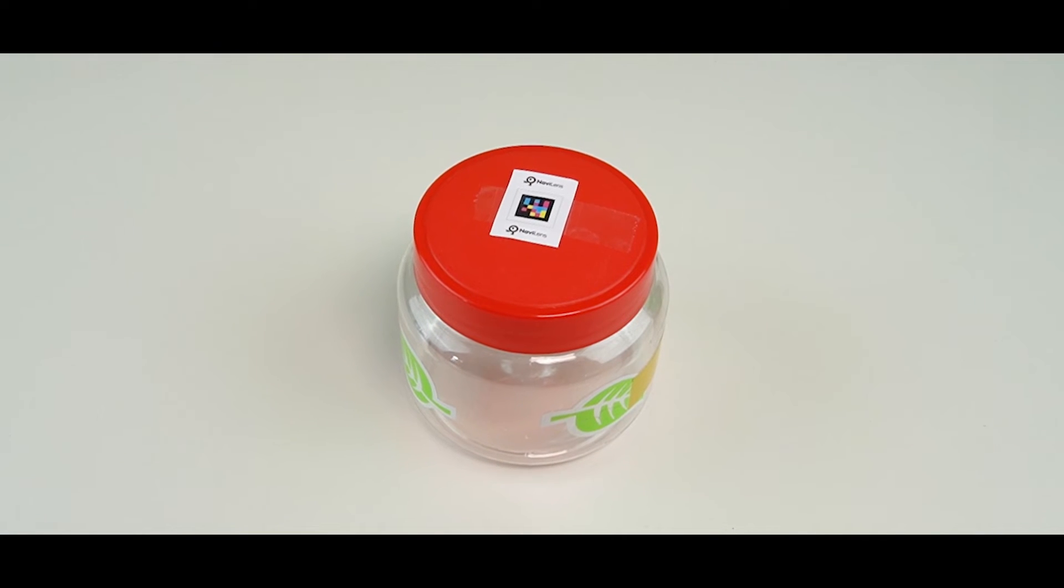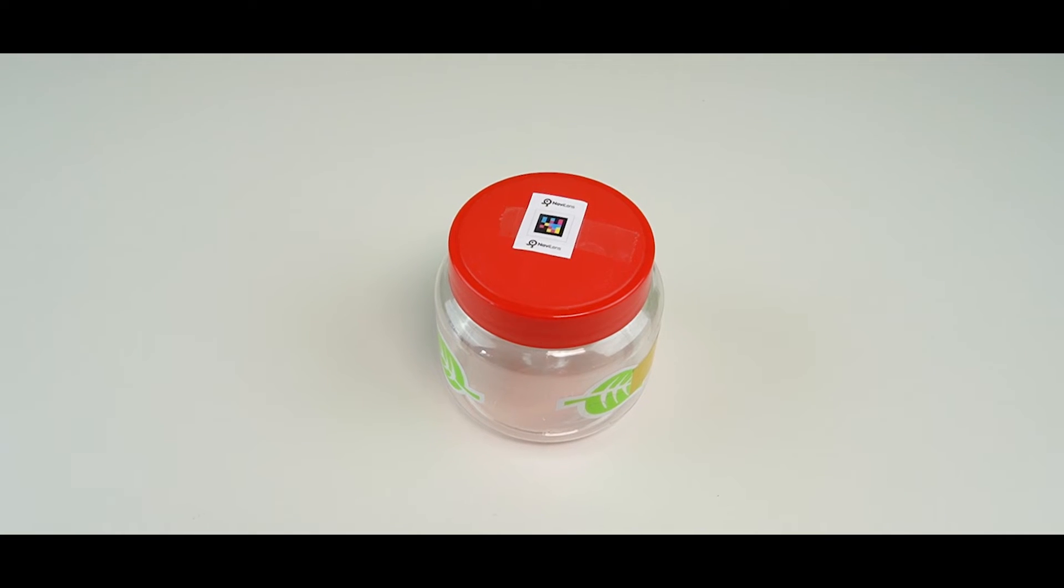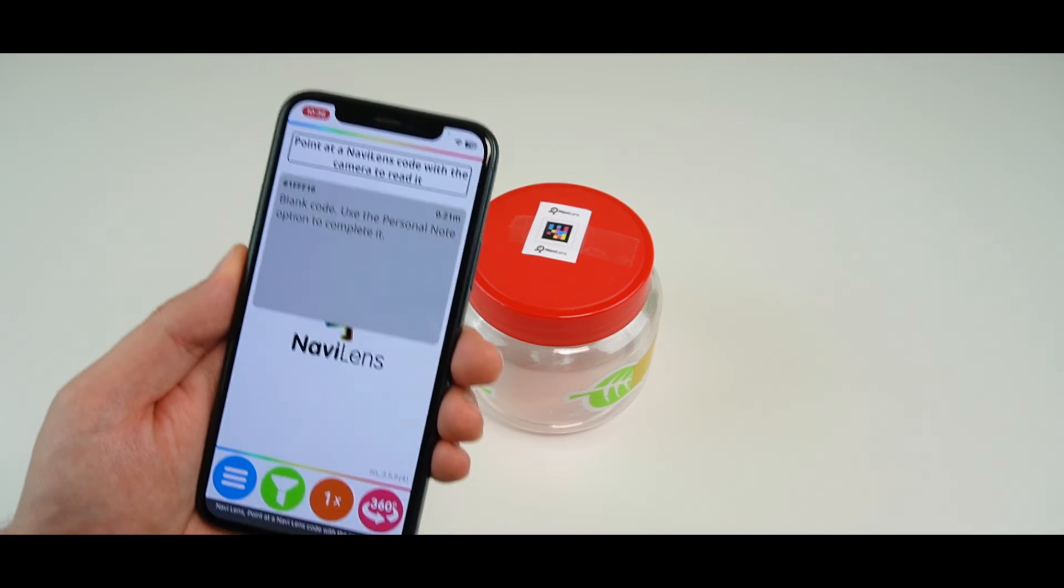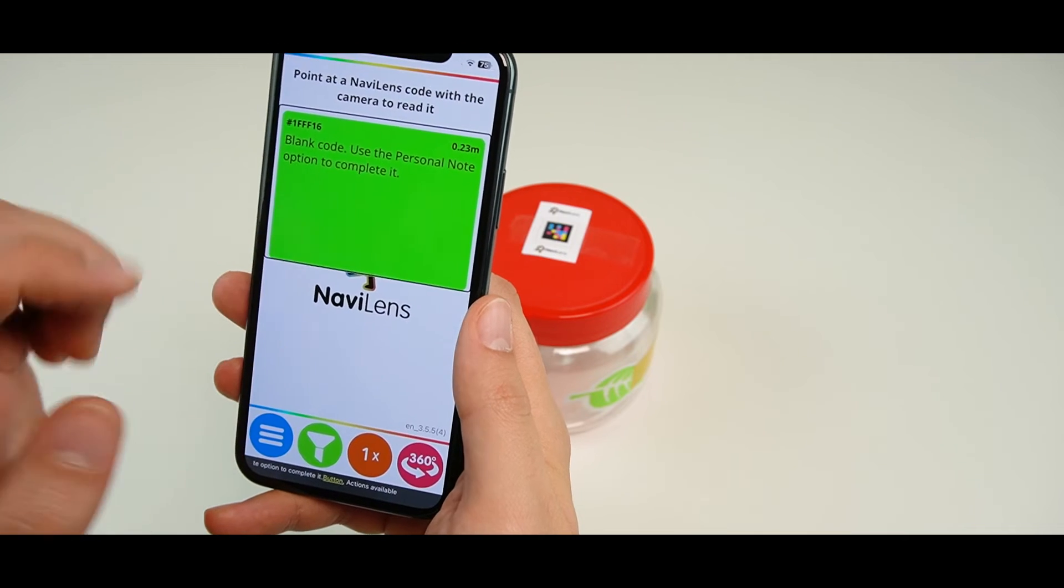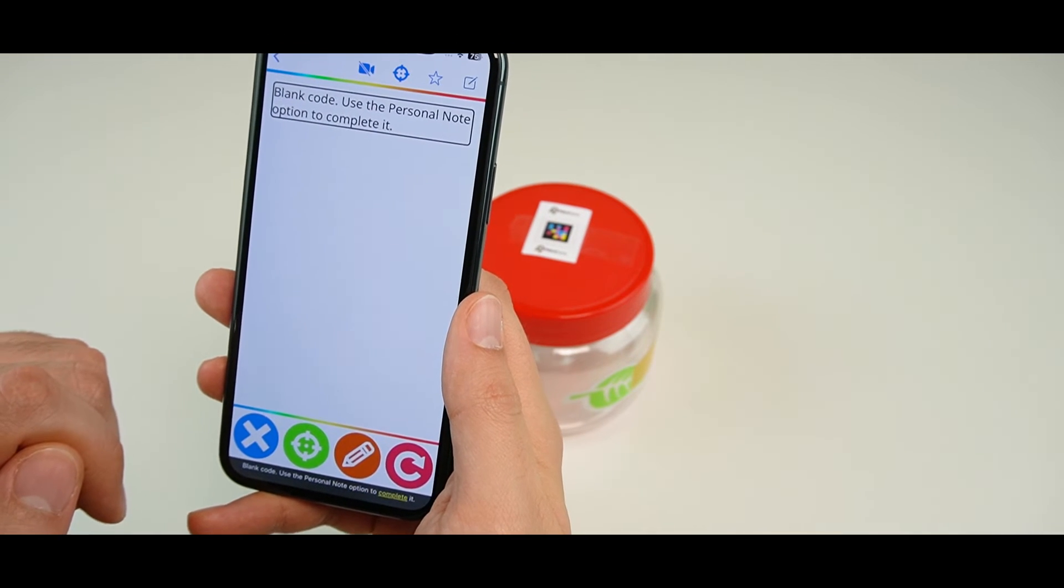After detecting a code, click on the information pop-up window to display all of the possible options. Blank code. Use the personal note option to complete it.